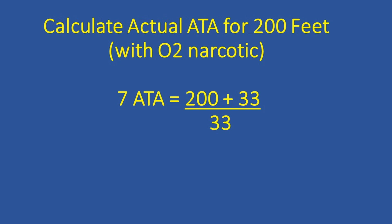Next we're going to calculate the actual atmospheres absolute for our planned dive to 200 feet, again with O2 being narcotic. So we have 200 feet plus 33 divided by 33, and that gives us a total of seven atmospheres absolute for our actual depth.